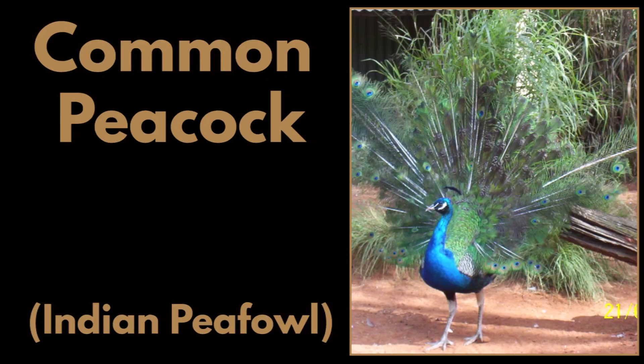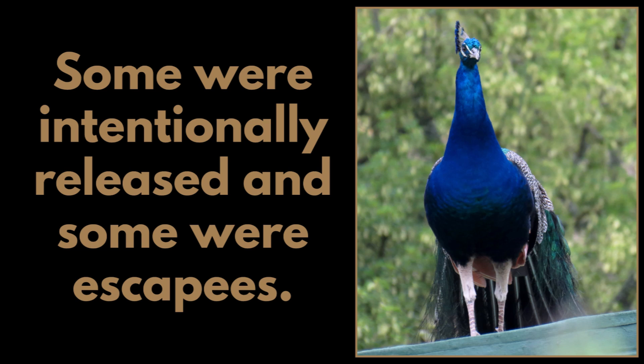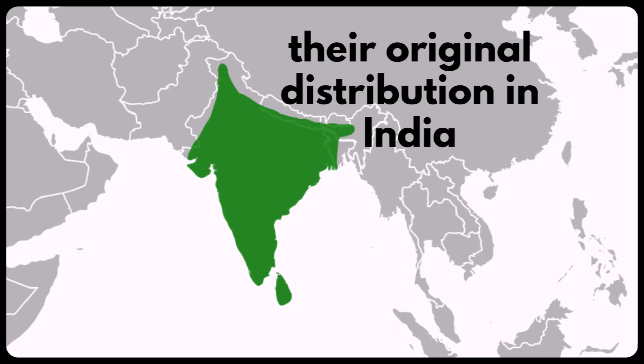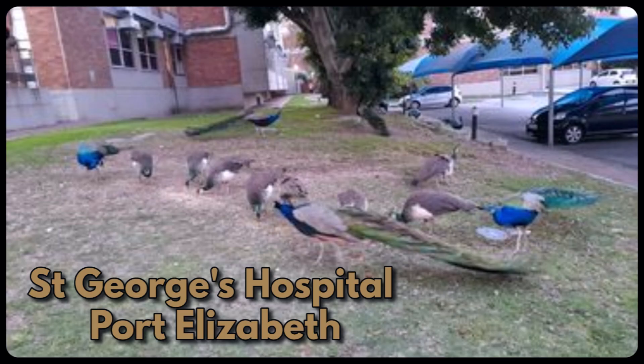The common peacock was introduced to Robben Island off Cape Town, Port Elizabeth (now Gqeberha), and East London in about the late 1800s. Some were intentionally released and some were escapees. Their original distribution is in India. This particular group descends from peacocks introduced to a nearby mosque in the Port Elizabeth area, but they are now thriving in the hospital grounds of St George's Hospital where they get fed.